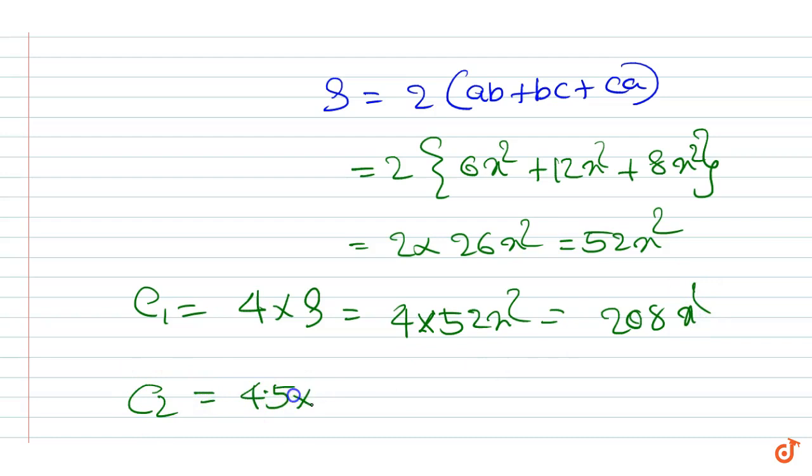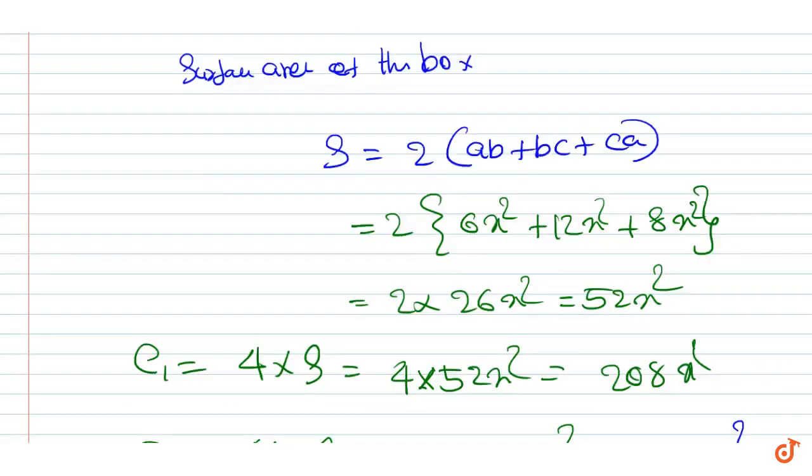And C2, the cost at rate 4.5, equals 4.5 times the surface area, equals 4.5 into 52x², which equals 234x².